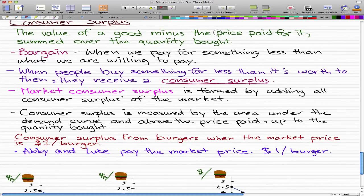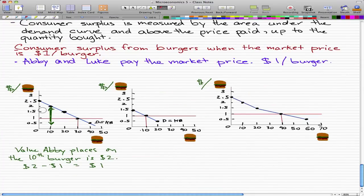The value of a good minus the price paid for it, summed over the quantity bought. The value Abby has for the 10th burger is $2, and the price paid is $1, so the consumer surplus is $1.